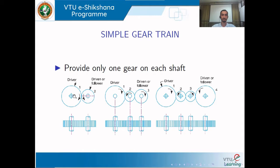Let us say the first gear has an RPM of N1 and the second gear has an RPM of N2. Correspondingly, the number of teeth on the first gear is T1 and the teeth on the second gear is T2. These figures also represent a simple gear train.